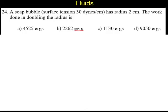Question number 24. A soap bubble, surface tension is 30 dynes per centimeter, radius of 2 centimeters. The work done in doubling the radius.